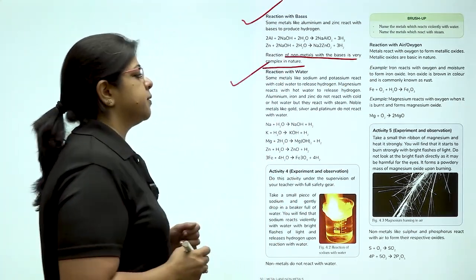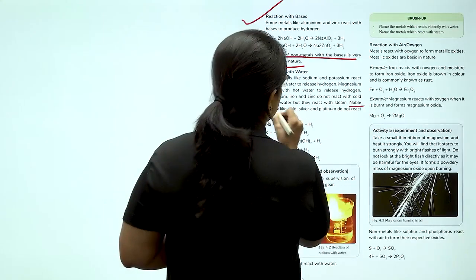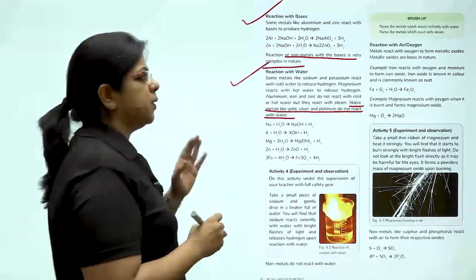Let us talk about the reaction with water. Na plus 2H2O gives NaOH plus H2. K plus 2H2O gives KOH plus H2. Mg plus 2H2O give MgOH2 plus H2. Zn plus 2H2O gives ZnO plus H2. 3Fe plus 4H2O give Fe3O4 plus 4H2. Therefore, we see that metals like sodium and potassium react with cold water to release hydrogen. Magnesium also reacts with water, but it reacts with hot water. Noble metals like gold, silver and platinum do not react with water.